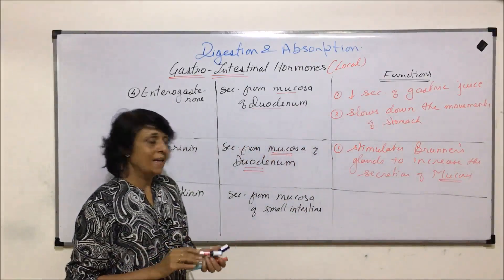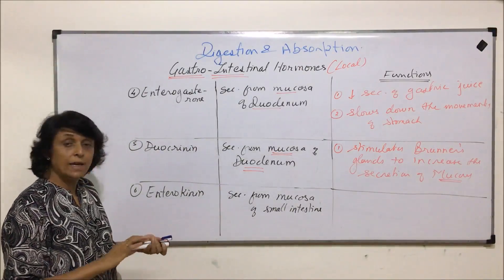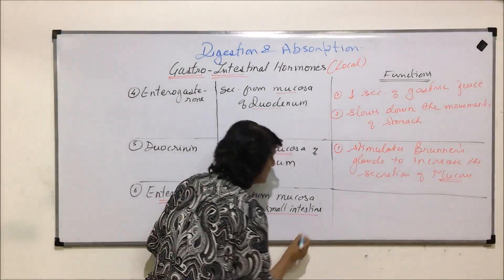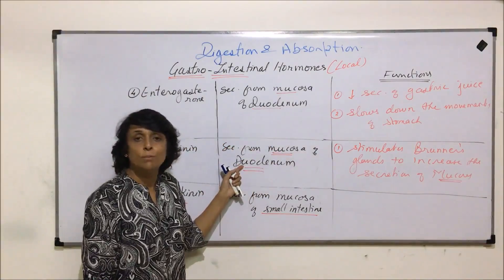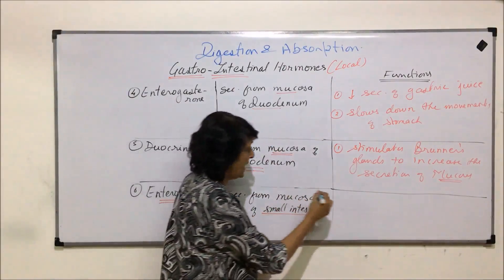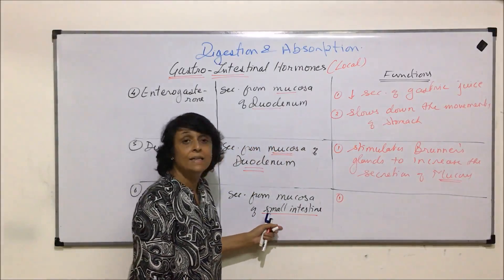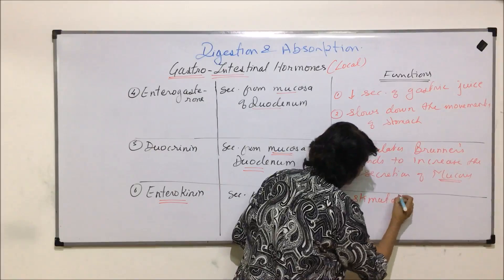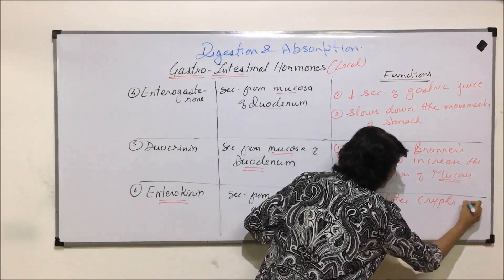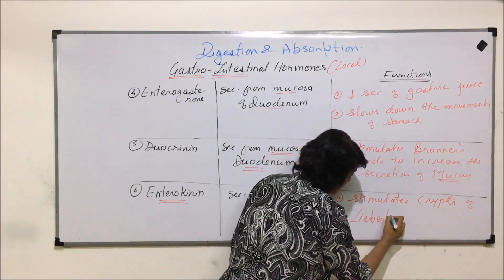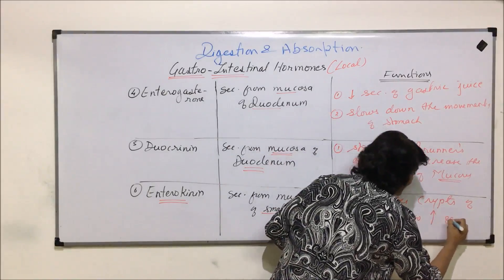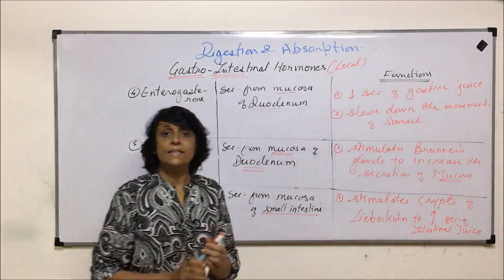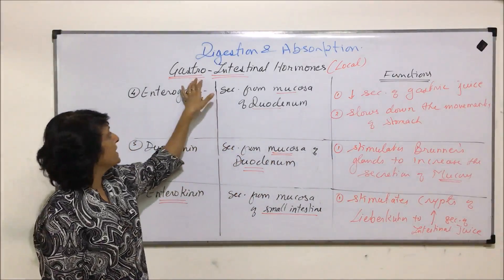The last local hormone is enterokinin. It is secreted by the mucosa of the entire small intestine, whereas duocrinin and enterogastron come only from the duodenum. Enterokinin acts on the crypts of Lieberkühn to stimulate them and increase the secretion of intestinal juice.